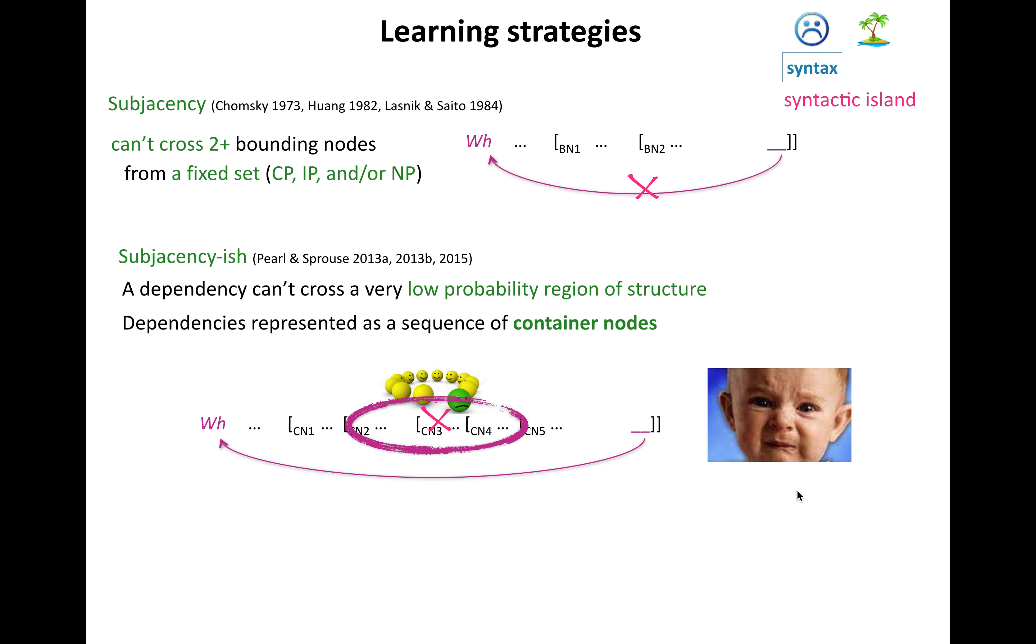That's container nodes. And so these are really our two different theories, and the subjacency is, one is that you're talking about a restriction on crossing a low probability region of structure where you're defining these in terms of sequences of container nodes, and these are just flattening out. So what do you like becomes IP-VP, because these are the structures that contain the gap, and that is your basic idea.